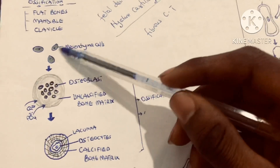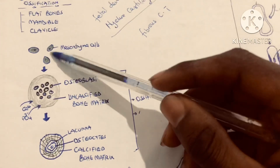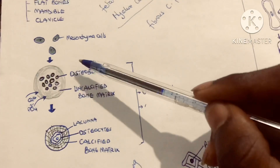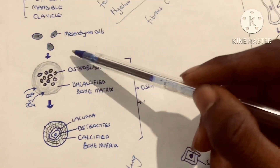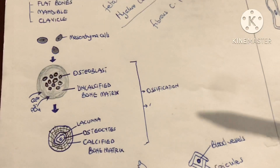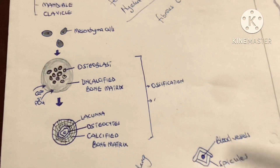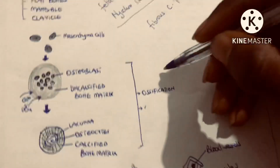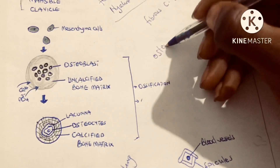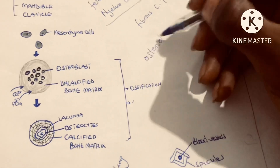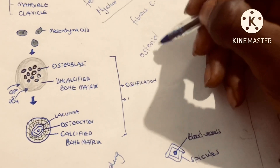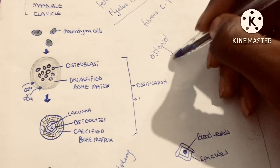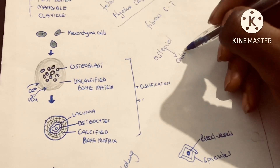After sufficient multiplication, they will differentiate into a bone cell called the osteoblast. We know what osteoblasts do — they secrete an uncalcified matrix called osteoid, which is the uncalcified bone matrix.